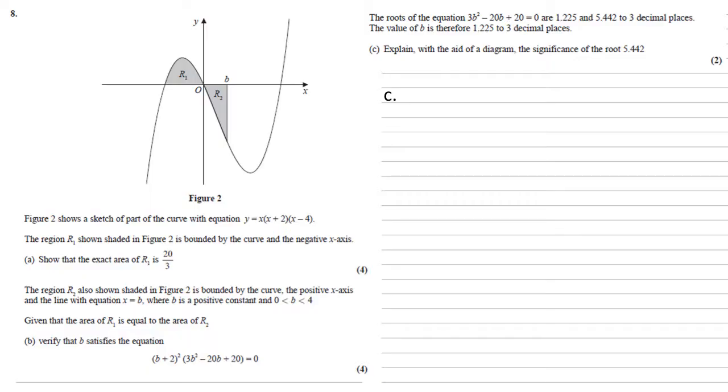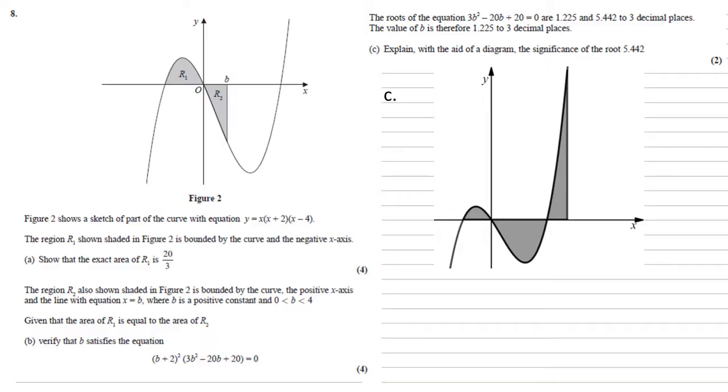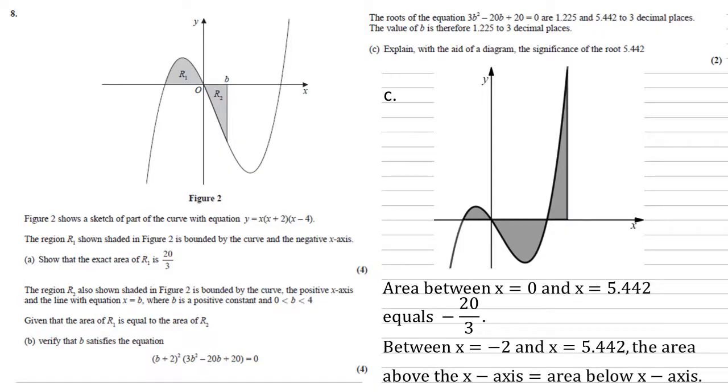So if you think about what this equation was trying to do, we were trying to work out the value of b, so the point where R2 is equal to R1. We know that b must be the smaller of the two answers given from the quadratic equation because it's between 0 and 4. So the other answer, 5.442, lies to the right of our curve like this, as it's also a point where the area between 0 and it must equal R1. So the area between x is 0 and x equals 5.442 is equal to negative 20 over 3. Furthermore, because this area on the right hand side is equal to R1 on the left, we know that between x is minus 2 and x equals 5.442, the area above the x-axis must equal the area below the x-axis.